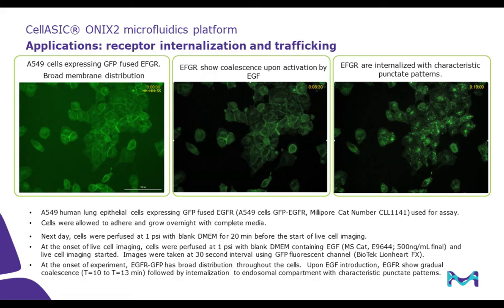There is a lot more information one can gain from understanding spatiotemporal dynamics of protein trafficking. This slide summarizes the receptor internalization process using A549 cells expressing GFP-fused EGF receptor. All culturing and experimental conditions were done using CellASIC. The upper left image shows the broad membrane distribution of GFP-EGF receptor when cells are cultured in one of our plates. The middle image shows the initial change in receptor distribution when its ligand, EGF, is introduced. The receptor starts to coalesce along the membrane surface, followed by eventual receptor internalization and trafficking to the lysosomal compartment, producing a distinctive punctate formation as shown on the right side of the image.